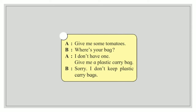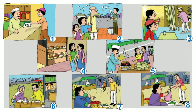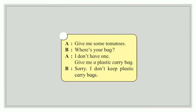Next conversation — A: 'Give me some tomatoes.' B: 'Where is your bag?' A: 'I don't have one. Give me a plastic carry bag.' B: 'Sorry, I don't keep plastic carry bags.' Let us find which picture matches — yes, picture number 7, where one person is standing without any bag. So we will put number 7 to this conversation.